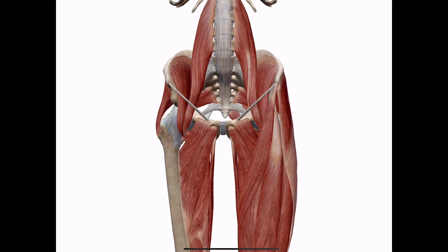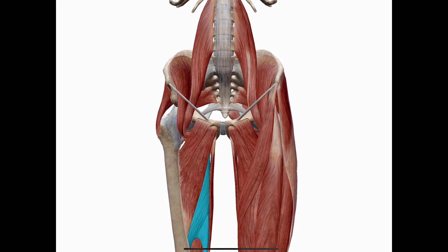When looking at hip flexors, we're looking at the iliopsoas complex — the psoas and the iliacus — and also the rectus femoris. Yes, one of your quads is also a hip flexor. When looking at supporting structures on top of your hip flexors, which are commonly thought to be a major cause of many hip issues, we also have to look at the adductor muscles. Some of those are actually supporting structures and also help to flex the hip.